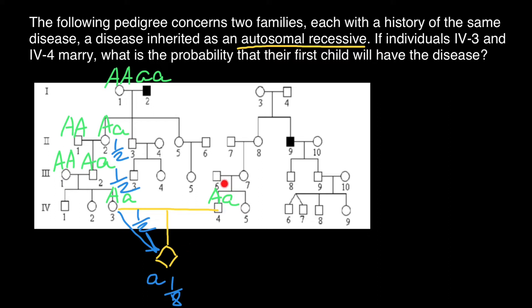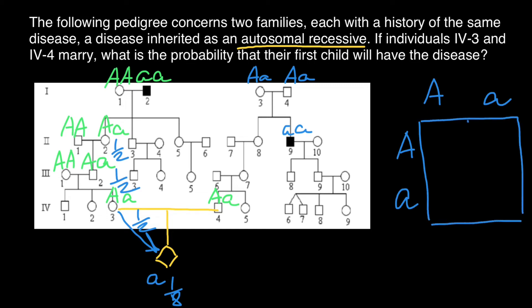Now let's take a closer look at the father's family. We see that this male is affected, so his genotype is small a, small a. But his parents are phenotypically normal, which means their genotype is capital A, small a and capital A, small a — they are obligate heterozygous, and each can pass the recessive allele to their child. Now let's find the probability that this female is heterozygous. We know that both parents are heterozygous for sure, so let's build a simple Punnett square.